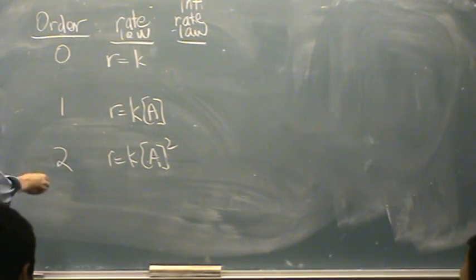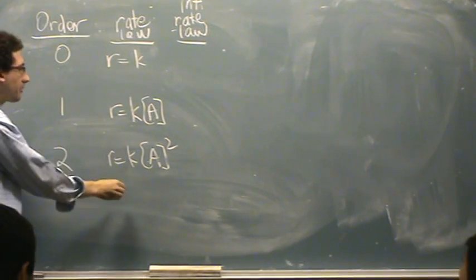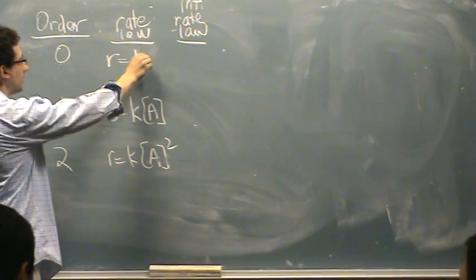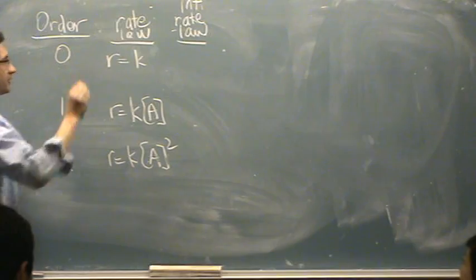Okay, so for our summary table, we've got the orders here, one and two, these are the three rate laws, a to the zero power, a to the one, a to the two.